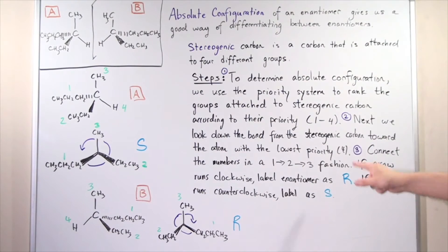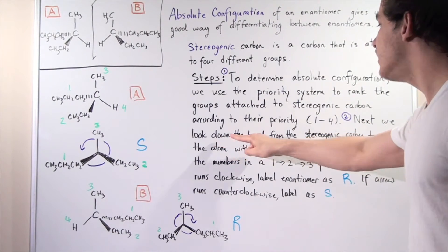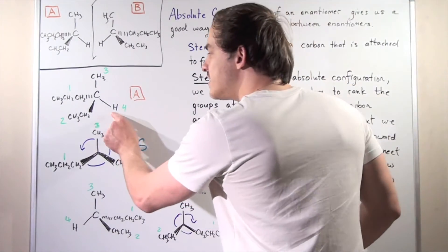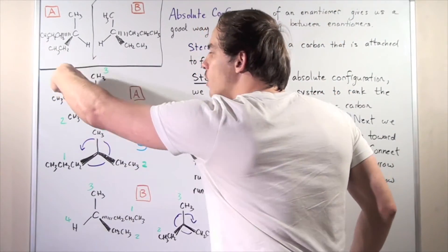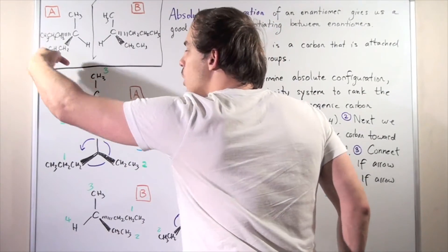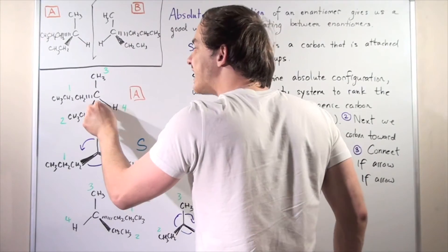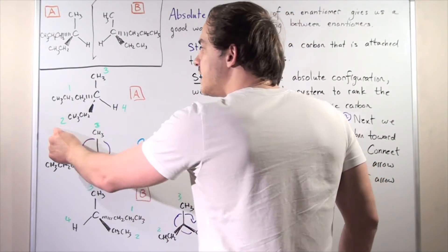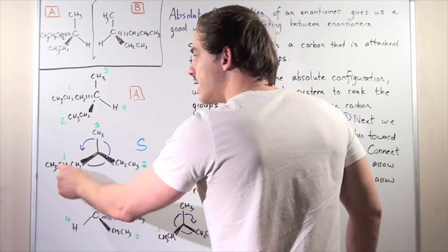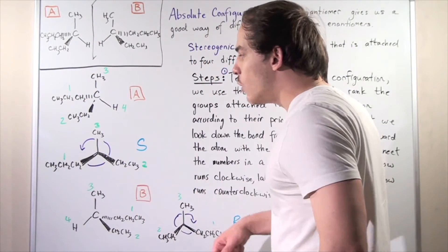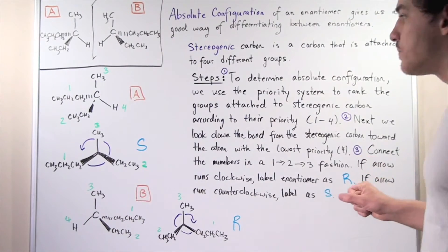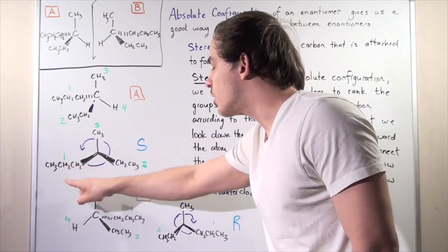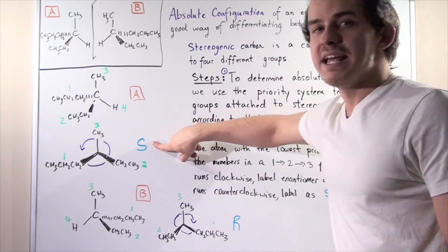Now we go to step two. We look down the bond from the stereogenic carbon toward the atom with the lowest priority — the H. So we're looking from this direction downward. If we flip it so that the H bond disappears because we're looking down, these numbers remain: this is still one, this is still two, and this is still three. Now we draw our arrow according to step three, going from one to two to three. We have a counterclockwise direction, and according to step three, that labels enantiomer A as S.